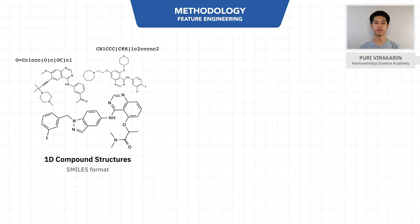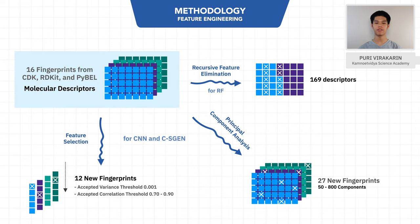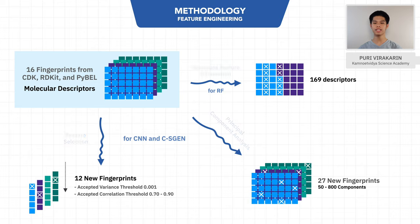Then, we convert SMILES — the notation that represents the structure of the compound — into fingerprints or binary representations. Afterward, these fingerprints will have their dimensions reduced to decrease the computation time and chance of overfitting. So we use three techniques for dimensional reduction.